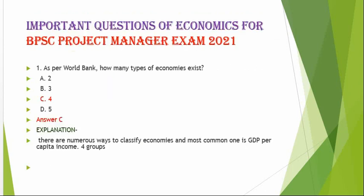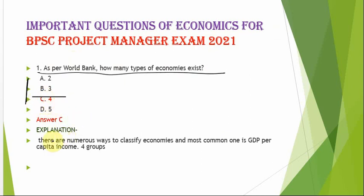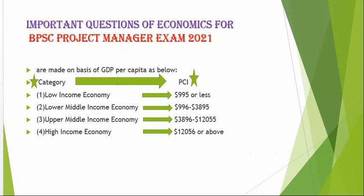The first question is: as per the World Bank, how many types of economy exist? The correct option is option C — there are four types of economies. There are numerous ways to classify economies, and the most common one is GDP per capita income. The four types are: first, low income economy; second, lower middle income economy; third, upper middle income economy; and fourth, higher income economy.